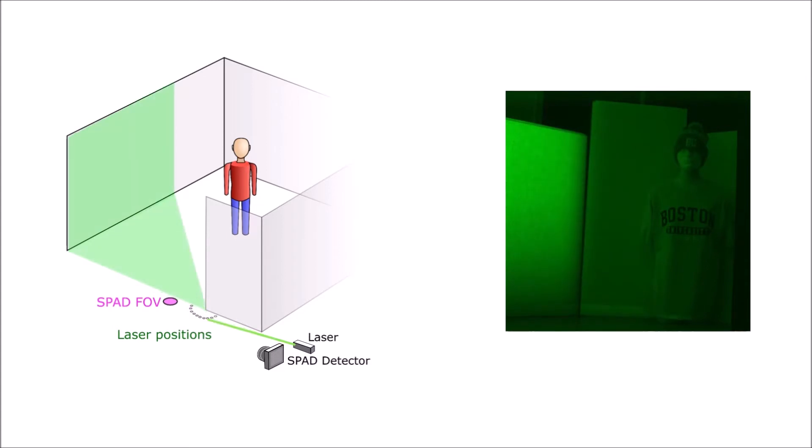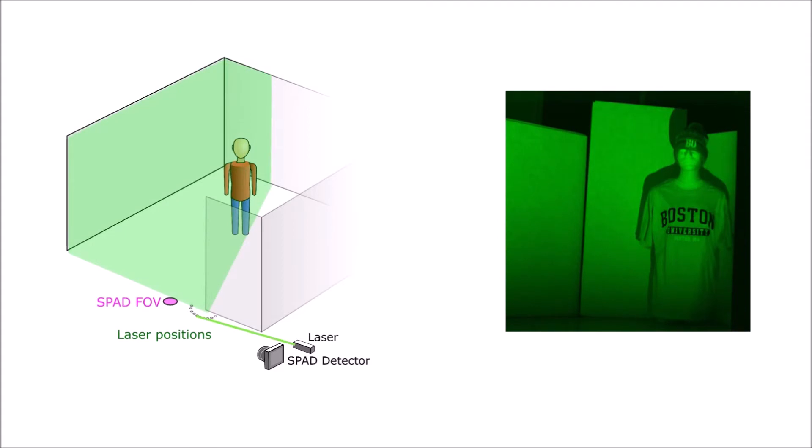We see that, due to the occluding edge, each subsequent laser illumination position will illuminate more and more of the hidden scene, and so each measurement will contain photons reflected from more and more of the hidden area. Each subsequent illumination position results in a measurement containing reflections from the same portion of the hidden area as the previous illumination plus an additional area.